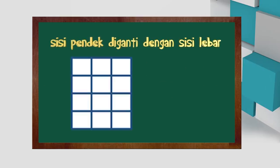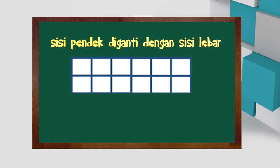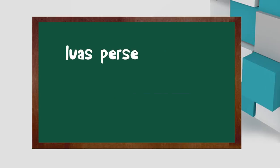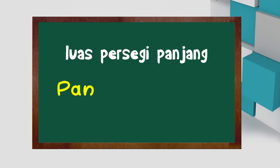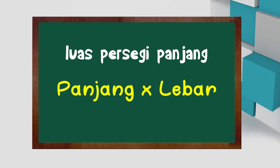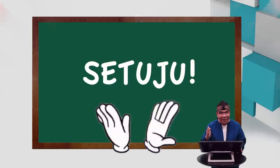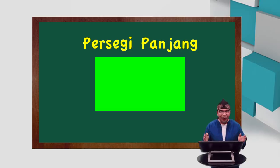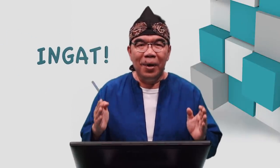Nah, kalau sisi pendek Bapak ganti menjadi lebar, berarti luas persegi panjang adalah perkalian dari panjang kali lebar. Setuju? Ingat, Bapak tidak mengajarkan langsung rumus, tapi Bapak akan mengajarkan penjelasan untuk kalian menemukan rumus sendiri. Anak-anak, perhatikan soal berikut.